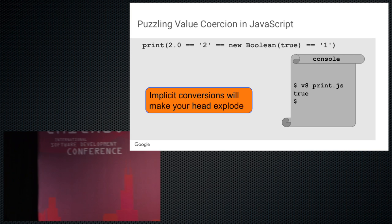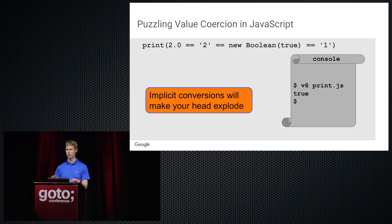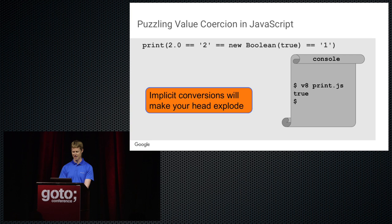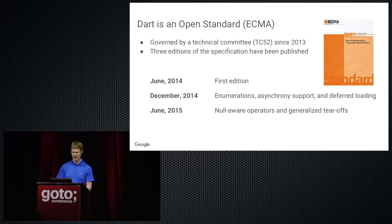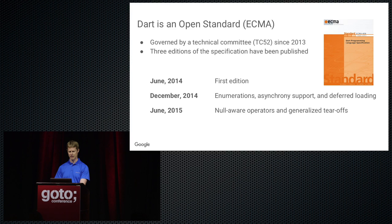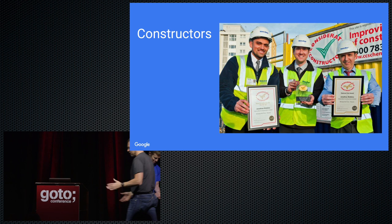This is more than enough implicit conversion happening behind the scenes to make your head explode. These conversions happen in real code, not intentionally — you probably won't write expressions like this very often — but they happen because you're unaware of how things work out. Dart is an open standard and has been since 2013. We've gone through a number of revisions and will walk you through a few things we've added over the years.